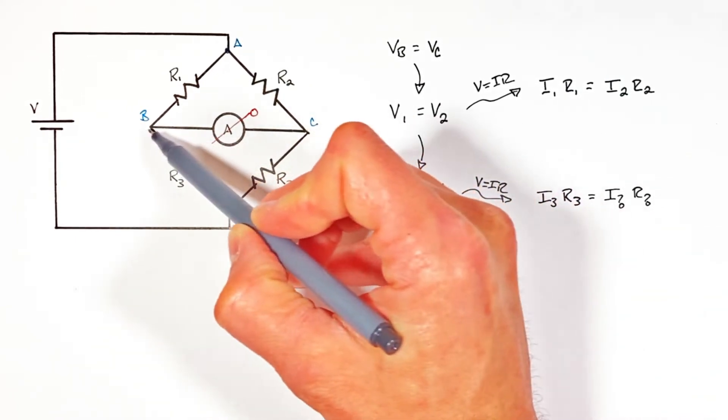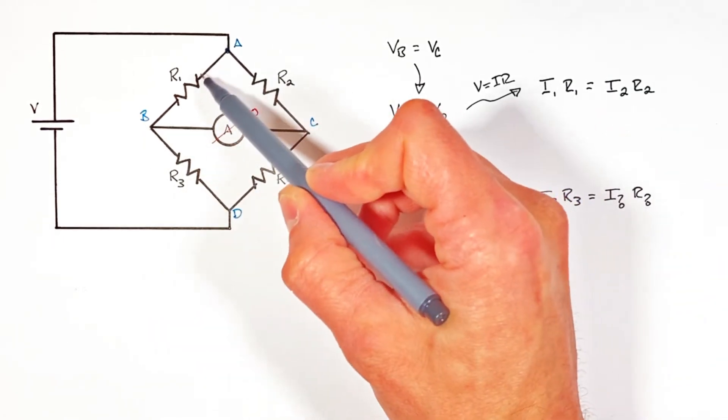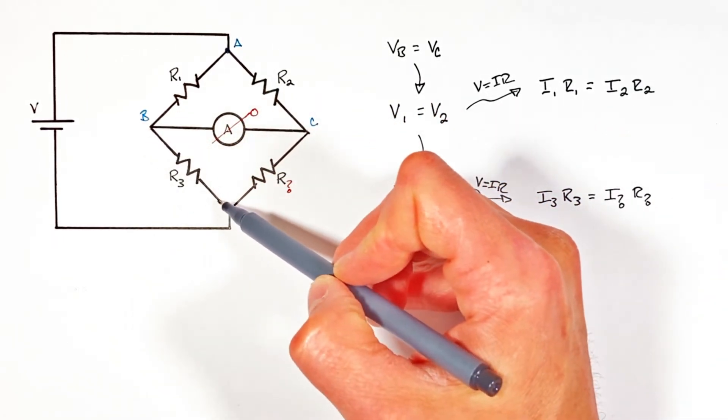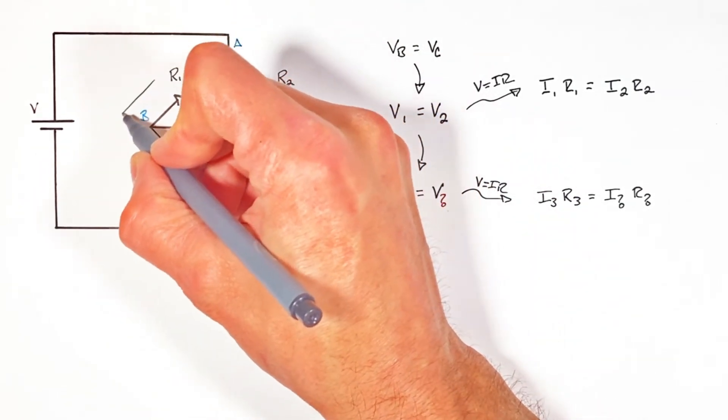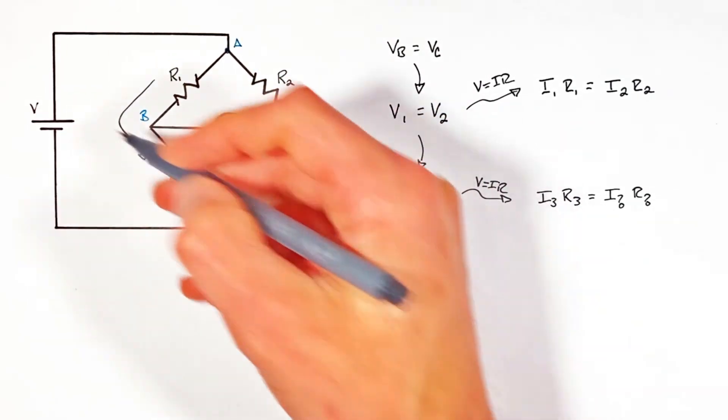So every bit of current through R1 is going to pass through R3, meaning there's some certain current around the left side of this Wheatstone bridge.